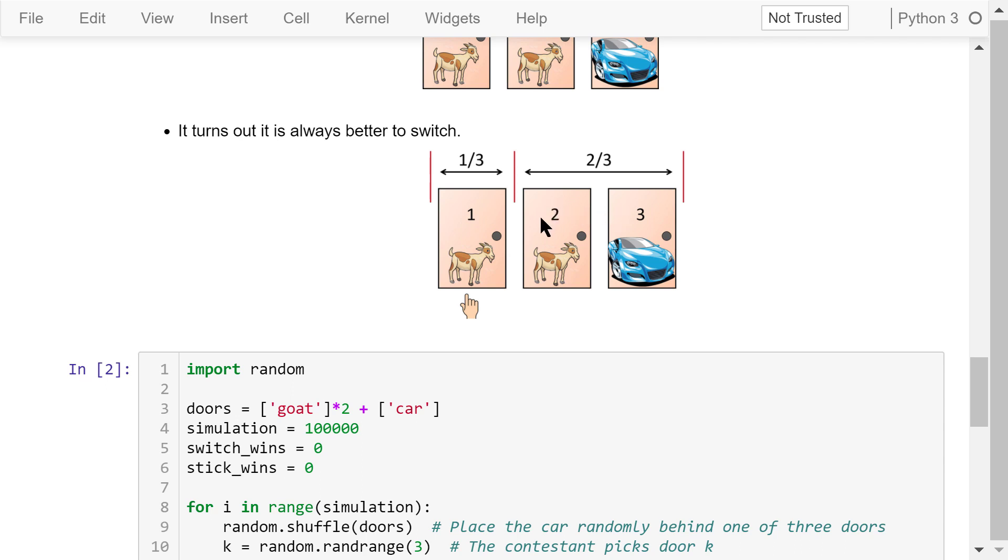The host then eliminates one door that does not have the car. Thus, there is a two-thirds chance that the car is behind the remaining door, and the contestant better switches. However, this is not to say that this strategy guarantees the contestant wins a car. It just means by switching, the chance of winning is changed from one-third to two-thirds.